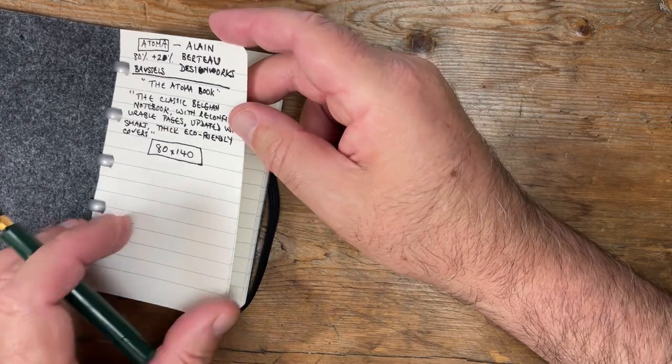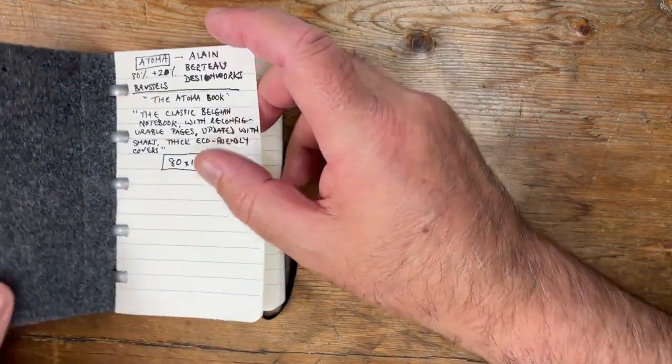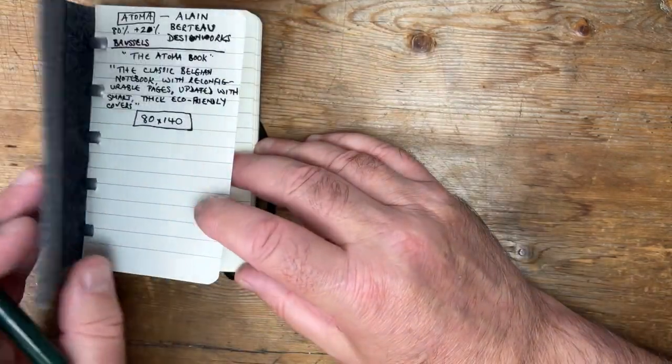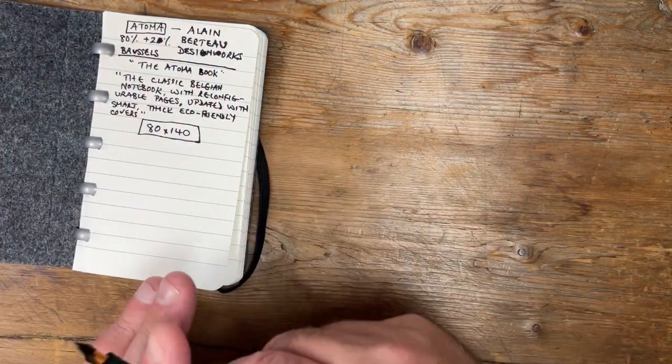But there is a disadvantage of these, which I'll go into a little bit later. Apparently this paper is made of what they describe, Atoma describes as long fibers, which more readily hang on to these discs. How much did I pay for this? I mean, it's such an unusual design.